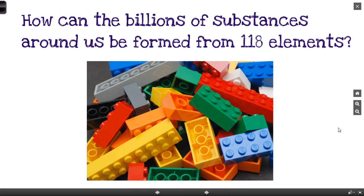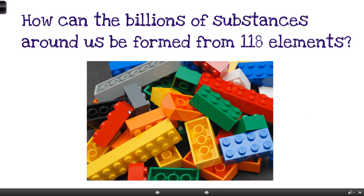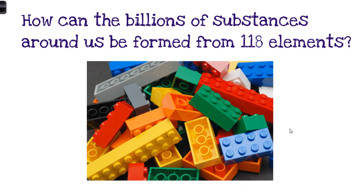One last question before we finish: how can the billions of substances around us be formed from only 118 elements — that's how many are on the periodic table at this stage? The answer is actually pretty simple — it's like Lego. In this pile of Lego there are only a few different types of bricks, but with a limited number of different pieces you can still make a whole lot of different things.